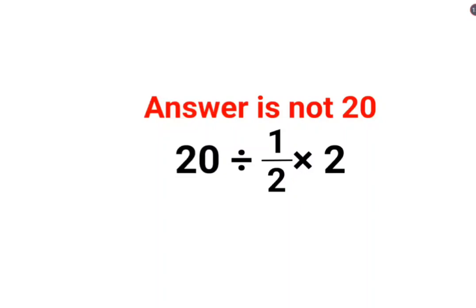Welcome everyone. Today we are going to understand why the answer for this question is not supposed to be 20. We have 20 divided by 1/2 multiplied by 2.